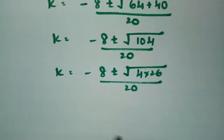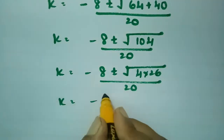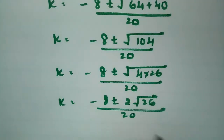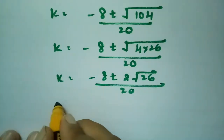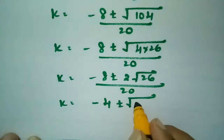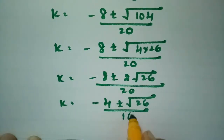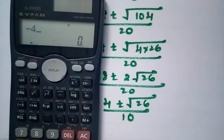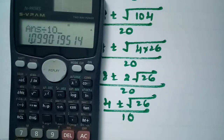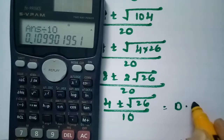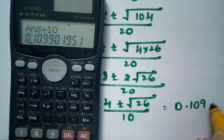Since √104 = √(4 × 26) = 2√26, we get k = (-8 ± 2√26) / 20, which simplifies to k = (-4 ± √26) / 10. Taking the positive root: k = (-4 + √26) / 10 ≈ 0.1099.